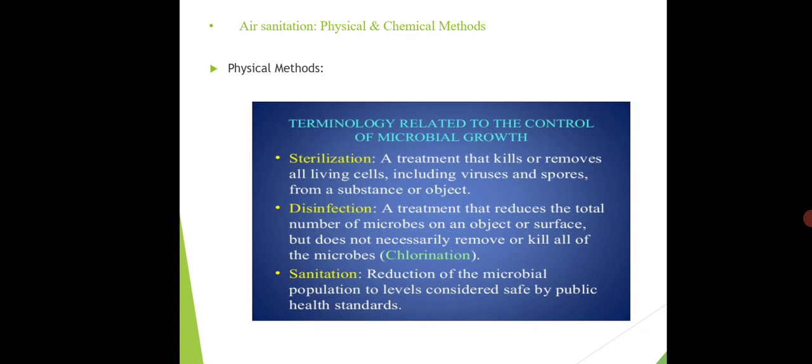Third is sanitation. Sanitation is the reduction of microbial population to levels considered safe by public health standards. Sanitation refers to killing microorganisms present on a living body — on any part of the body like hands, toes, legs, etc. We use certain sanitizers that contain alcohol to kill the microbial flora present on the living body — that is known as sanitation.